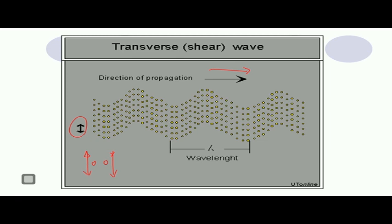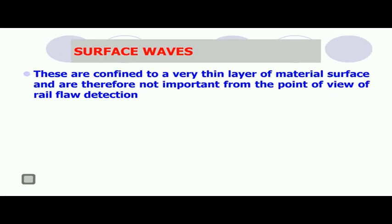As shown in this figure, one summit and another summit are indicated, as well as one trough and another trough, so wavelength is defined as the gap between two consecutive summits or two consecutive troughs. Surface waves are confined to a very thin layer of material surface and are therefore not important from the point of view of rail flaw detection. These waves are not given importance in ultrasonic flaw detection of rails.